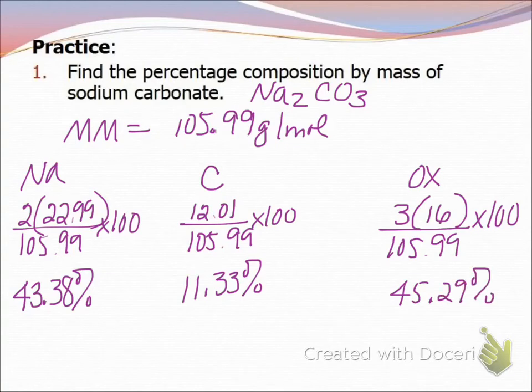How can I check myself to see if I did this correctly? Add them up, and they should equal 100%. Occasionally, if you rounded a little bit different, you might get 99.99 or 100.01. That's close enough. If I had written down 45.28, I would have gotten 99.99, and that would have been acceptable. Sometimes it'll ask you just for one of the elements, and then you just do one of them.